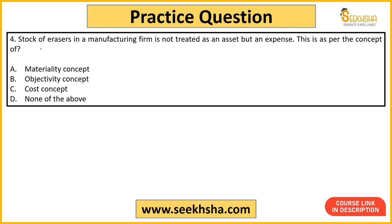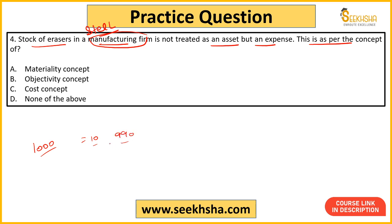Fourth question — yeh ek thoda sa situation based question hai. Question kehta hai: stock of erasers in a steel manufacturing firm is not treated as an asset, but an expense. This is as per the concept of? Isko aap asset nahi treat karoge — aapne for example ek saath ek hazaar erasers manga liye. Ki bhai use hoti rahengi — abe ek hazaar erasers aapki usi saal mein to use nahi hongi. For example aapki us saal mein sirf 10 erasers use hoi. To baaki ki 990 erasers ko asset create karo na, ki woh erasers aapki property hain. Lekin aap usko expense karte ho, aap usko asset nahi treat karte — aap woh kharche mein daal doge. Woh 1000 jo aapne erasers khari di, aap usko ek baar mein uthaa karke aapne kharche mein daal doge. Aap usko asset nahi bologe. To yeh kaun sa concept hai? Yeh concept hota hai option a: materiality concept.